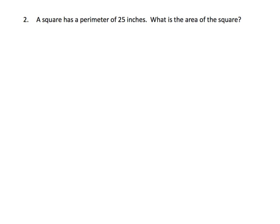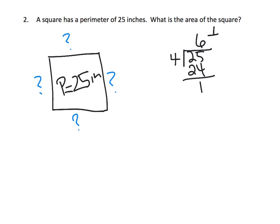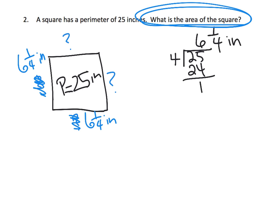The last slide: a square has a perimeter of 25 inches. We need to find the side length — that's 25 divided by 4, which gives six and one-quarter inches per side. So each side is six and one-quarter inches. Now we need to find the area of the square, which means we multiply six and one-quarter by six and one-quarter.